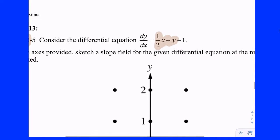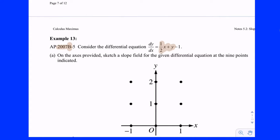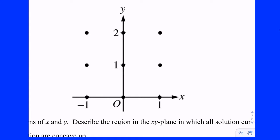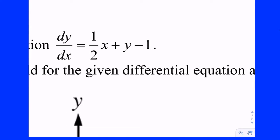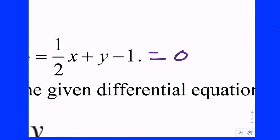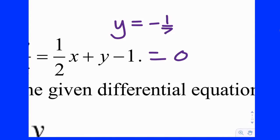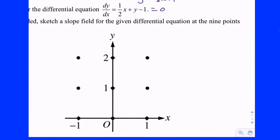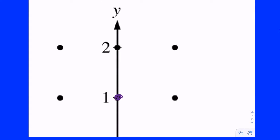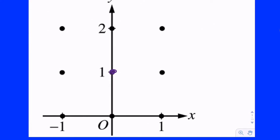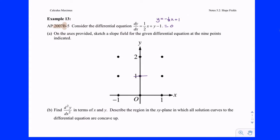On the axes provided, sketch the slope field for the given differential equation at the nine points indicated. Don't draw it anywhere else. You might want to think about where the slopes are zero. If you solve for y you get y equals negative one-half x plus one, so all along that line you're going to have zero slopes. Where would that line exist? The y-intercept is at positive one and the slope goes down one, right two. The only place among the nine points where you'd get a zero slope is at (0, 1).